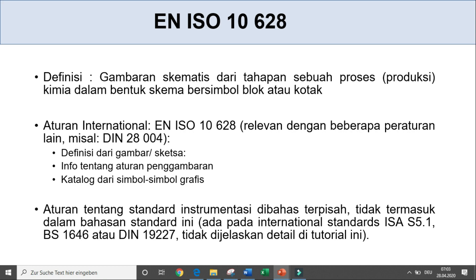Definisinya adalah: standar ini adalah gambar skematis dari tahapan sebuah proses produksi di pabrik kimia, dalam bentuk skema bersimbol blok atau kotak-kotak. Artinya memberikan gambaran skematis tahapan-tahapannya. Aturan ini berisi tentang definisi dari gambar atau sketsa, informasi tentang aturan penggambarannya, dan katalog dari simbol-simbol grafis.